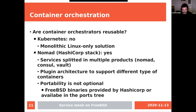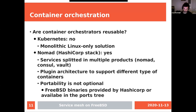At Trivago we use Nomad, and I discovered it's a pretty nice orchestrator. The first good thing is it's not monolithic — it's only the orchestrator, with other services as separate tools. It has a plugin architecture that's relatively easy to implement, and it supports different types of workloads including non-containers like JAR files. Portability is not optional: HashiCorp provides binaries for many operating systems including Solaris and FreeBSD, whereas Kubernetes doesn't even compile on FreeBSD.